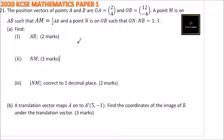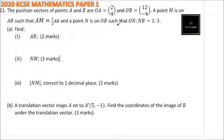This is question number 21. We are told the position vectors of points A and B are: OA equals (2, 4) and OB equals (12, -4). A point M is on AB such that AM equals a half of AB, and point N is on OB such that ON to OB equals 1 to 3. Part A: find vector AB, vector NM, the magnitude of NM.